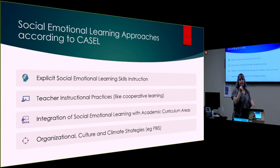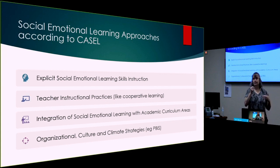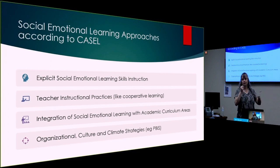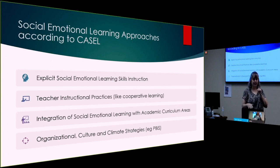The fourth approach is through organizational culture and climate strategies — standard positive behavior supports. For example, a school might have a principal's 200 club where students get reinforcement for following expectations. Names go on a board and when there's five in a row, they all get a reward. There are lots of different ways PBIS is incorporated.